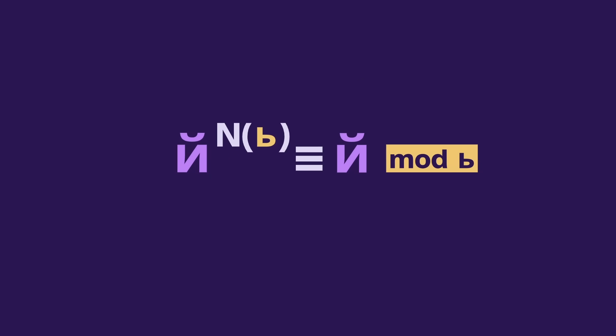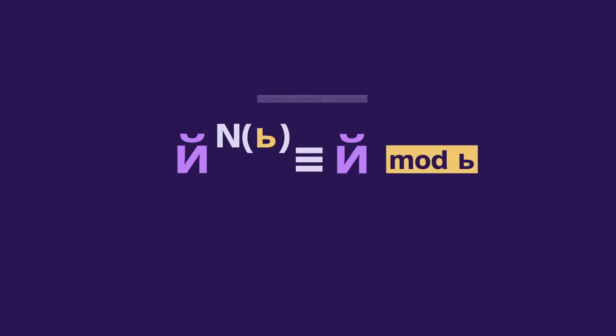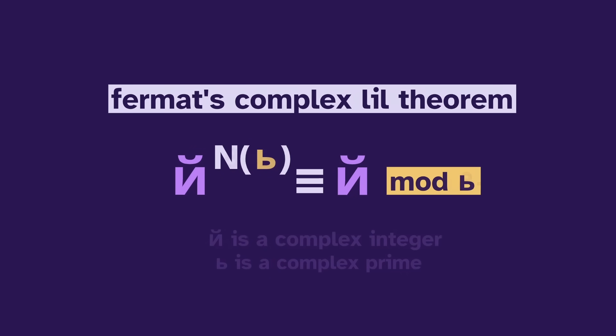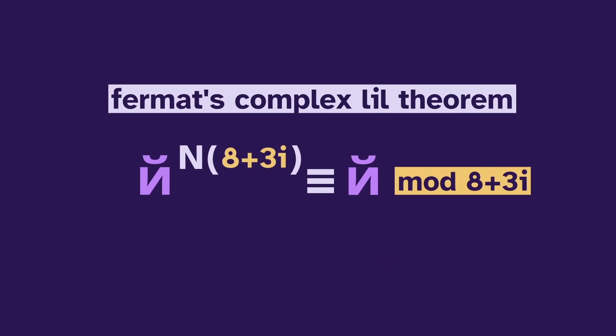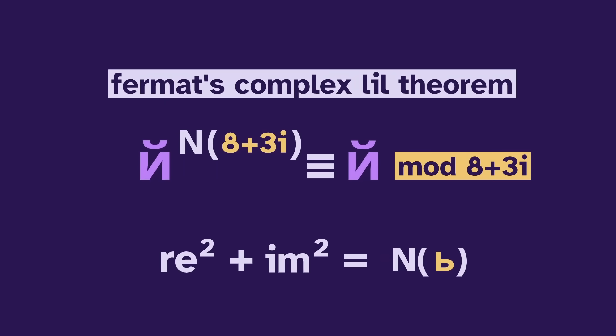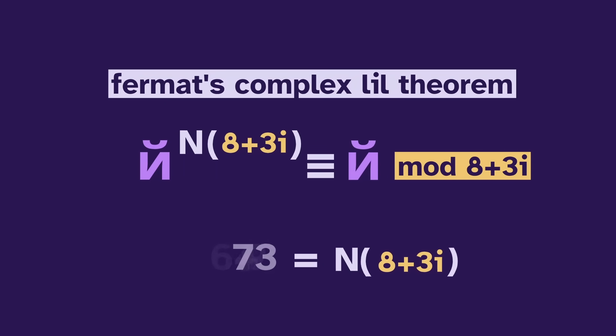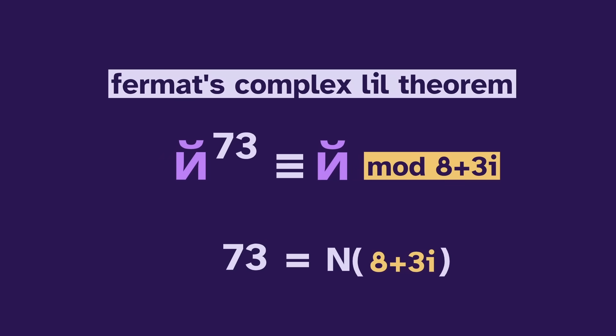So: y to the norm of p equals y mod p. This is Fermat's Complex Little Theorem. For example, if p is 8 plus 3i, then the norm is 8 squared plus 3 squared, or 73. So this equation should work — let's try it out.